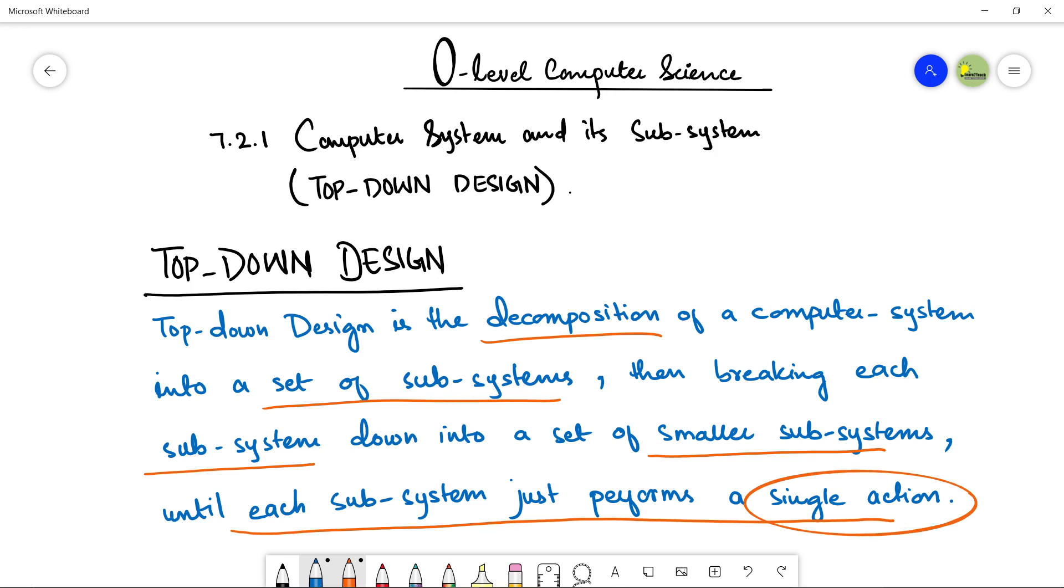This is very important. It means that you are breaking down a big subsystem into smaller subsystems into more smaller subsystems so that the division is done in such a way that the smallest subsystem will be performing a single task.